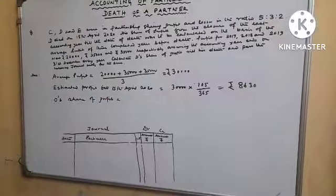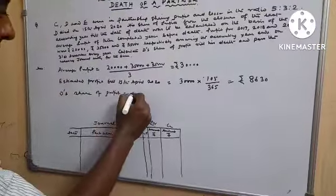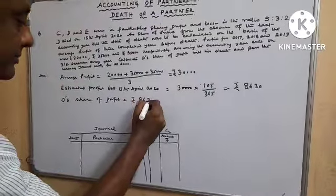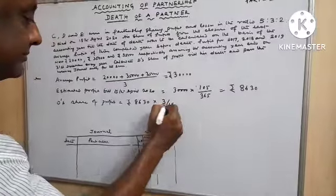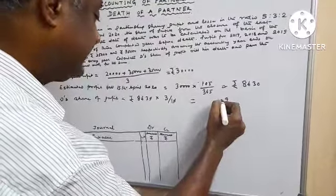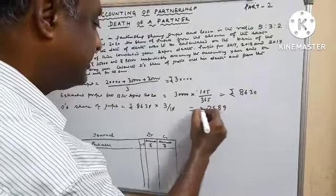3 by 10. Out of total share 10, D is getting 3 by 10. So 8,630 into 3 by 10 equals to 2,589.